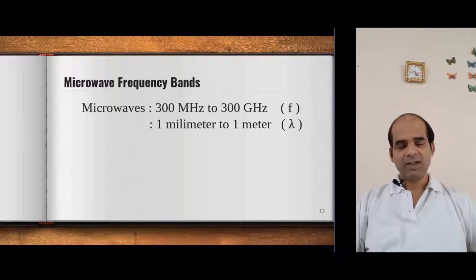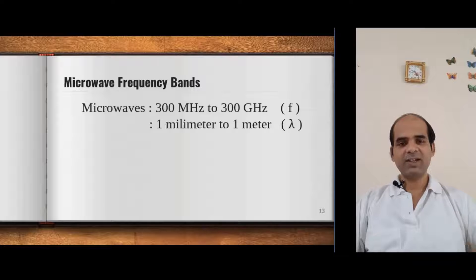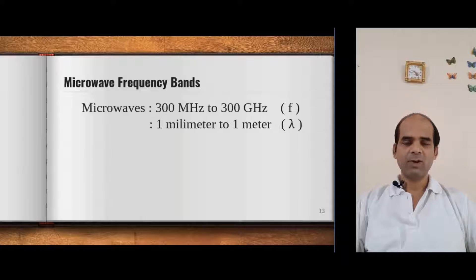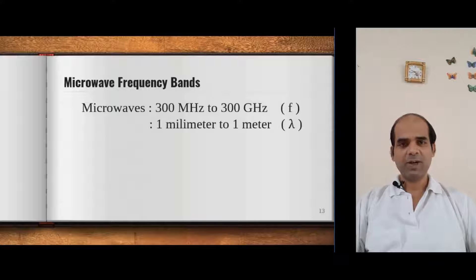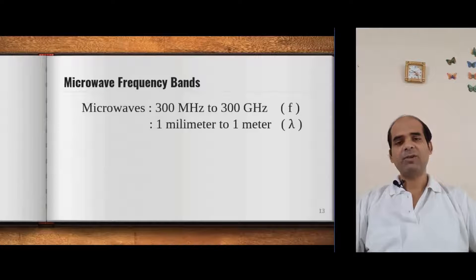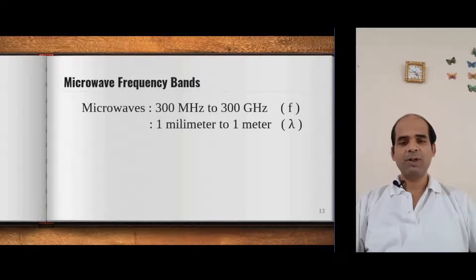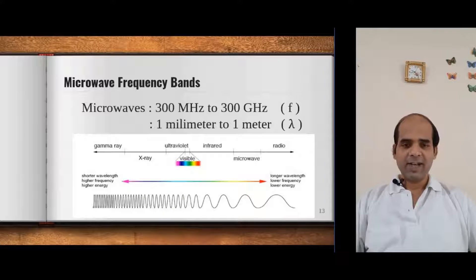It will also be represented in terms of wavelength — that is 1 millimeter to 1 meter. How will you convert this? Lambda equal to C by F — wavelength equal to velocity of light divided by frequency. Using that you can find out that it is 1 millimeter to 1 meter.